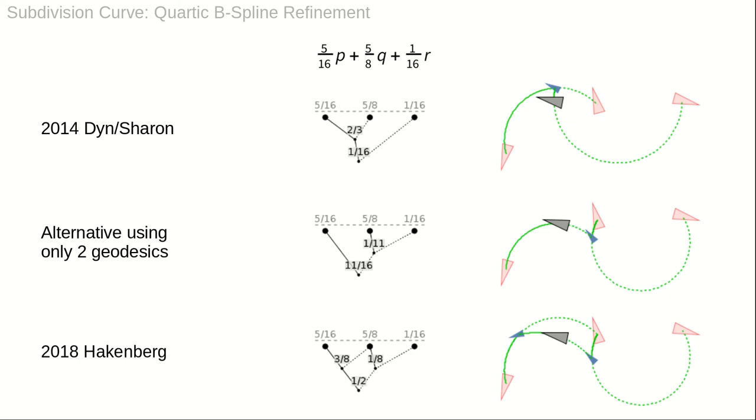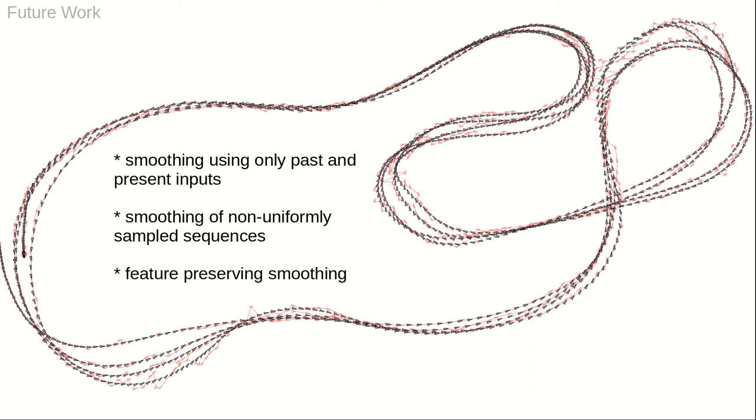An affine combination of three or more points does not translate to a unique geodesic average. For instance, Quartic B-spline refinement is represented by geodesic averages that use either two or three geodesics. The smoothing method that we have presented is one additional example for the use of geodesic averages as substitute for affine combinations in nonlinear spaces.